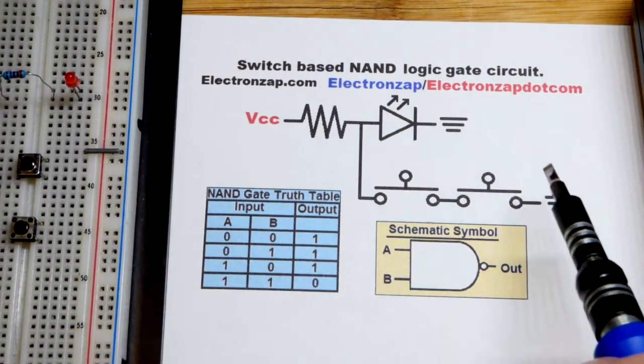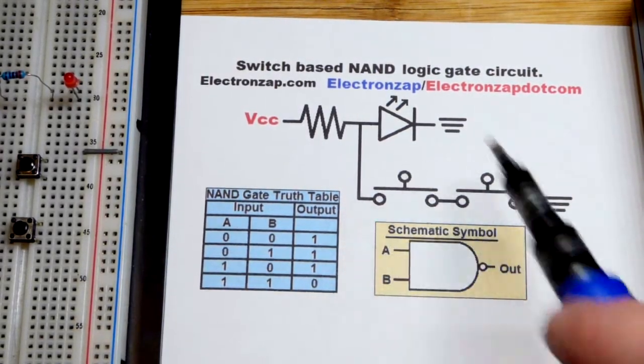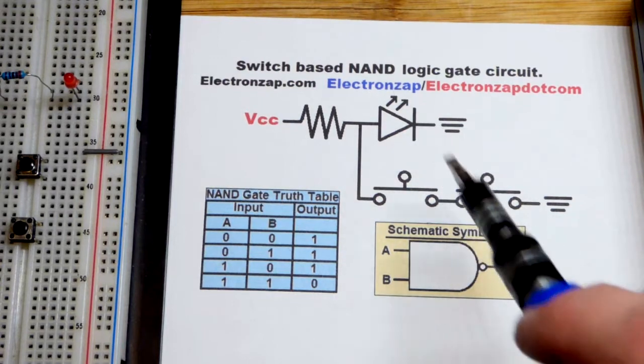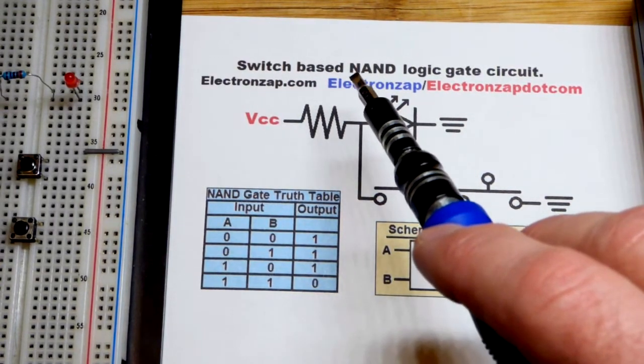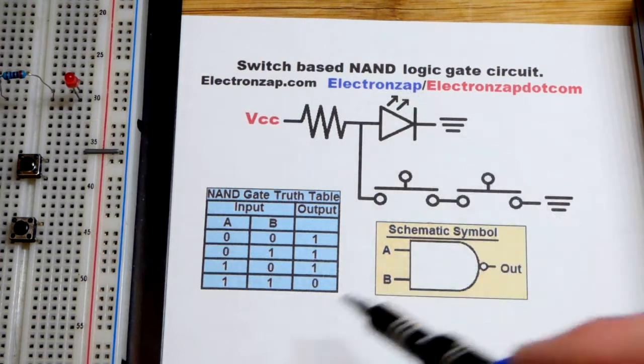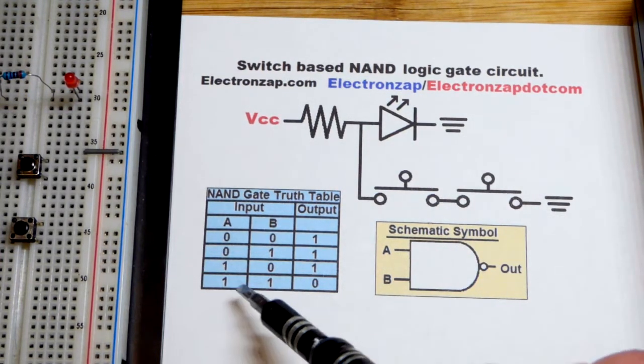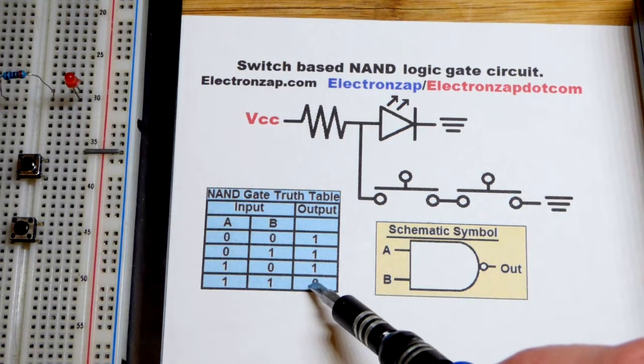Now in this video we're going to look at a switch based NAND logic gate. So the NAND logic gate is a marriage between the NOT gate and the AND gate. With the AND gate we needed all the inputs high for the output to be high.